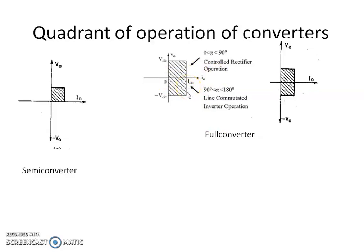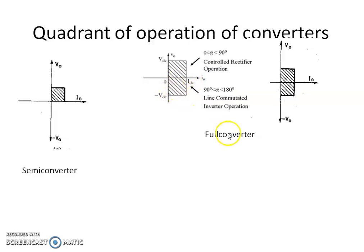If we vary the firing angle of the controlled switches in the full converter from 90 to 180 degrees, the output voltage will become negative. Therefore, the power is also negative, and we can obtain fourth quadrant operation with the help of a full converter.